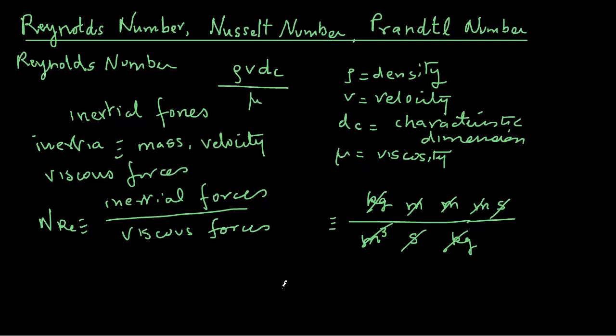The quantity itself gives us an indication of the role of the viscous and inertial forces in the flow of the fluid. If this quantity is less than 2100, then we call it laminar flow. If the quantity is 10000, then we call it turbulent flow. And between 2100 and 10000, we call it transitional flow.